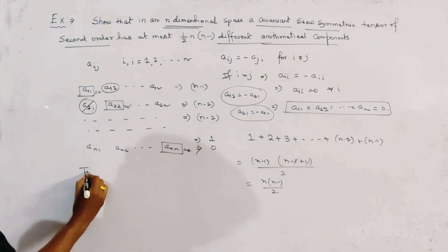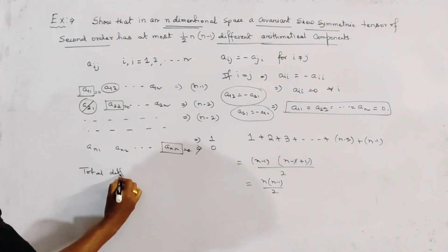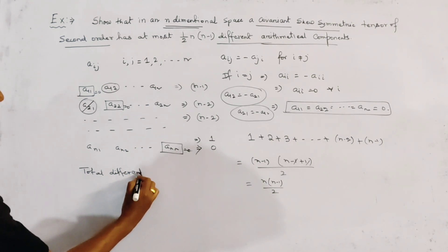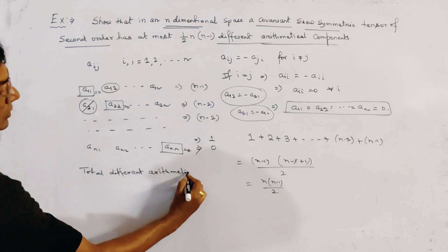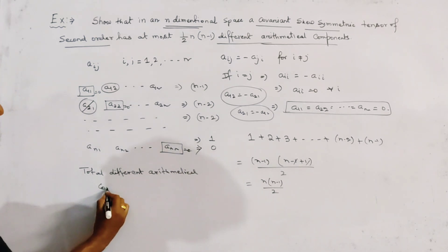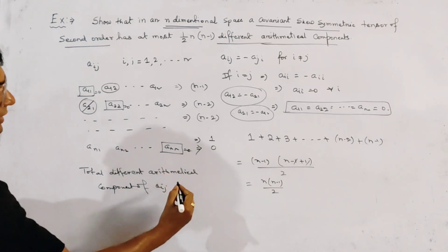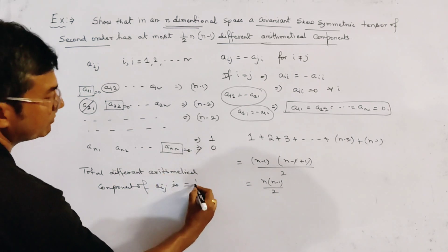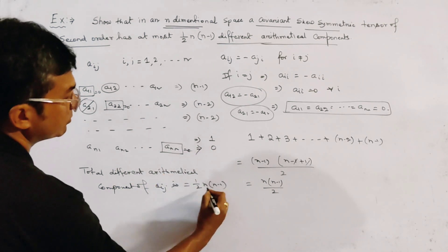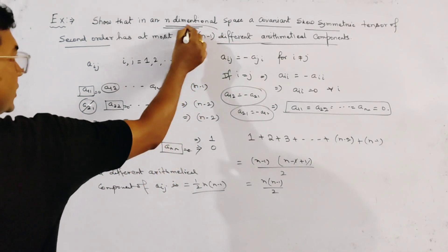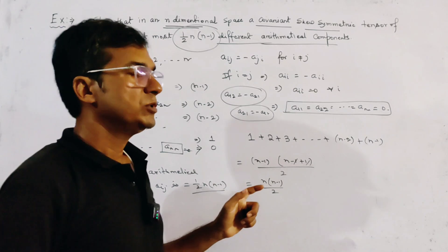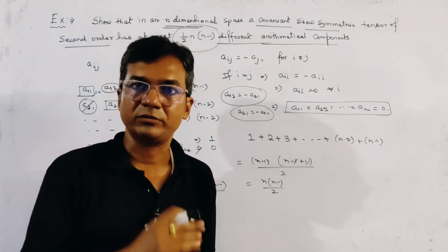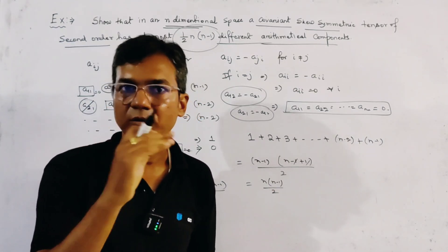So total different arithmetical components of a_ij is given by n into n-1 by 2. And this is our required result. Very important problem and this problem from previous year university paper. Thank you for watching.